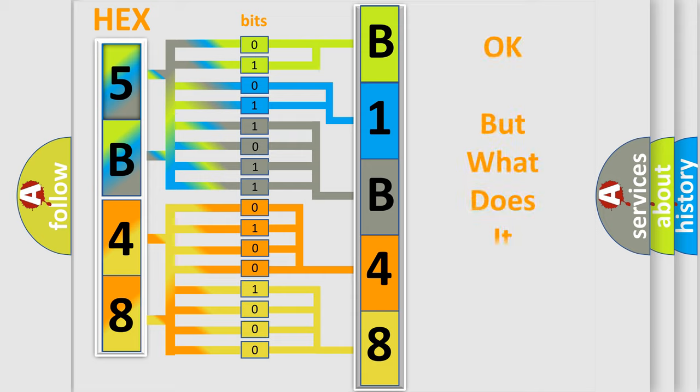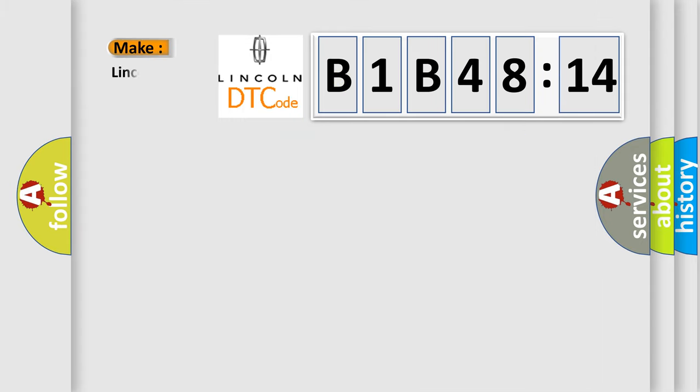We now know how the diagnostic tool translates the received information into a more comprehensible format. The number itself doesn't make sense if we cannot assign information about what it actually expresses. So, what does the diagnostic trouble code B1B4814 interpret specifically for Lincoln car manufacturers?